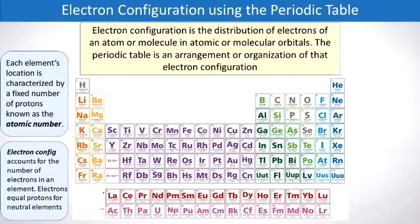Each element on the periodic table has a fixed number of protons, which is reported as its atomic number. In neutral elements, the atomic number also matches the number of electrons.